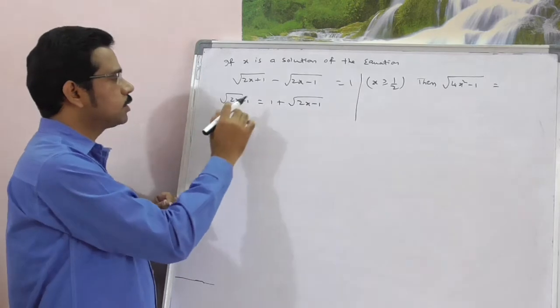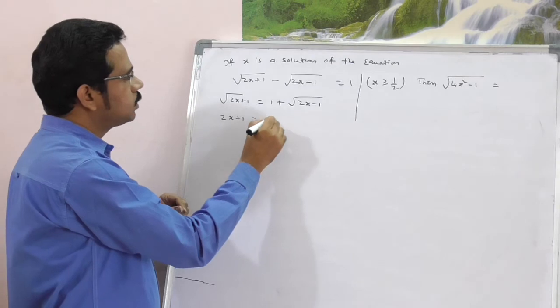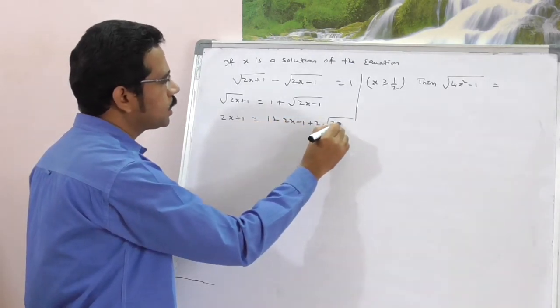Now, squaring on both sides. If you square on both sides, square root gets cancelled. This is 2x plus 1 is equal to, here it is 1 plus 2x minus 1 plus 2 square root of 2x minus 1.